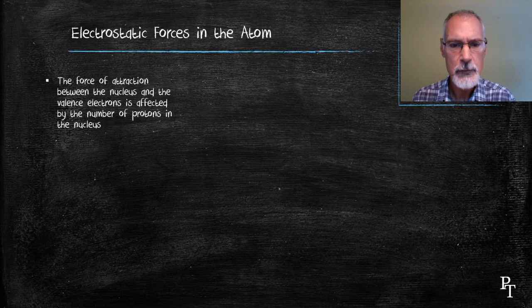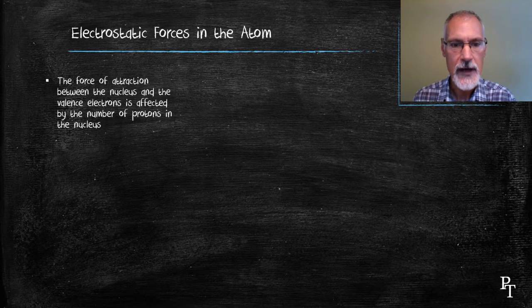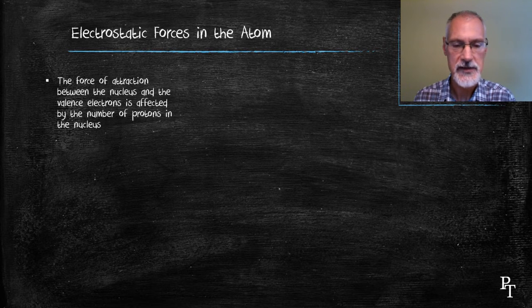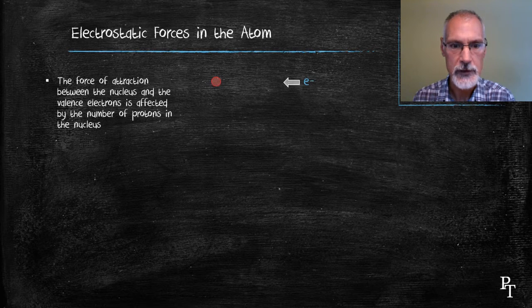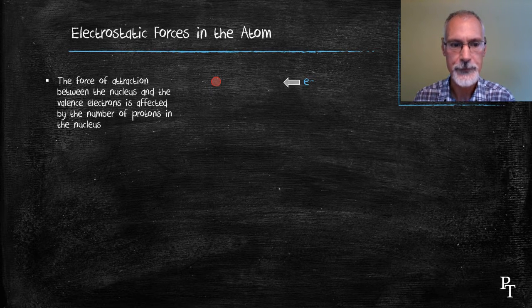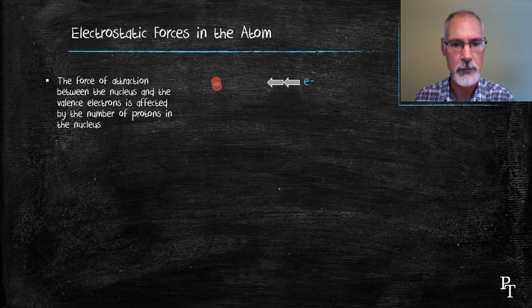First off, as the number of protons increases, that would increase the pull on the valence electrons. For instance, if I have one proton and one electron, we could say there's one unit of force. If I double the number of protons, I double that pull or double that attraction.